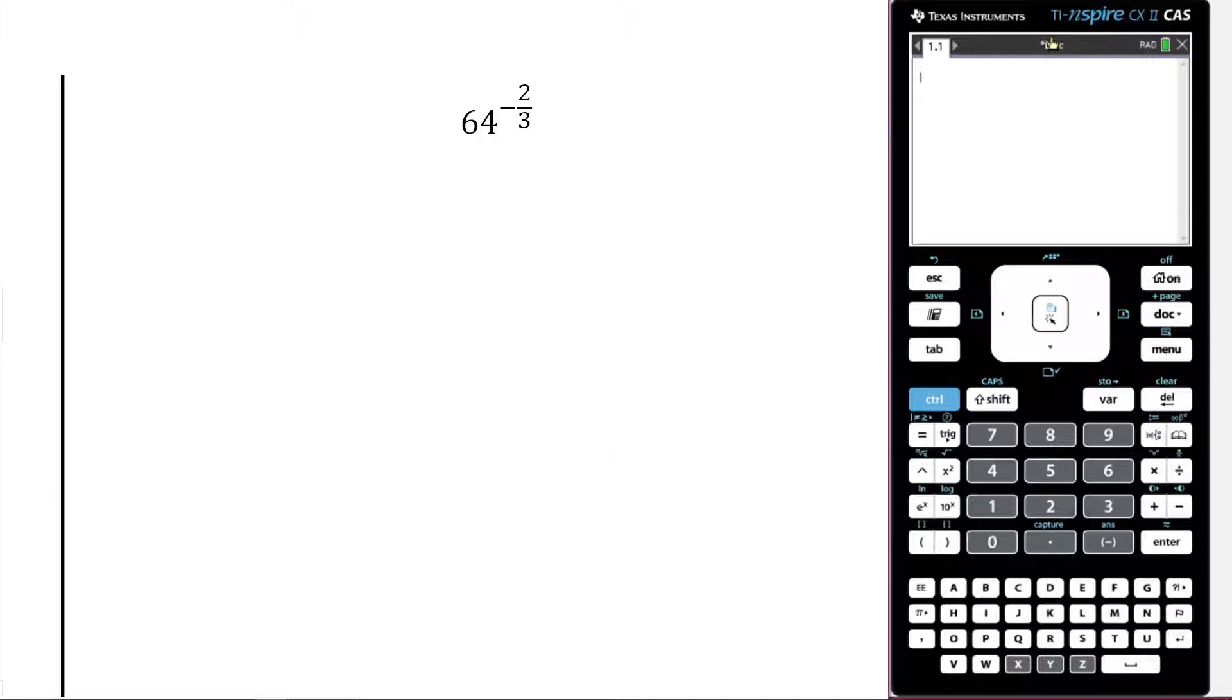Okay, again, they're just trying to warp our minds here. We've got a negative rational indice. Okay, so the first thing you're going to do is you're going to go 1 over 64, and now you can make it positive.